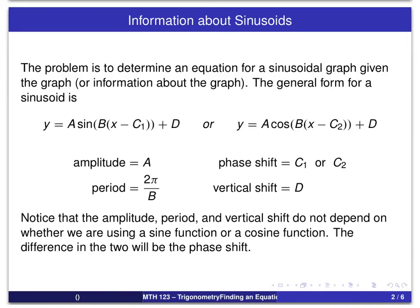Just like before in our previous example, we can choose whether to use a sine or a cosine, and in both cases we will get the same amplitude, the same period, and the same vertical shift.